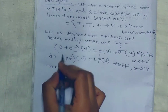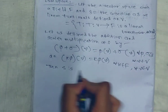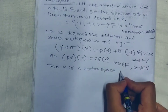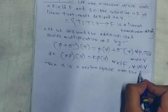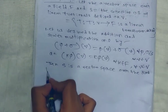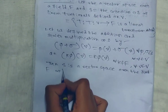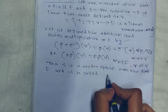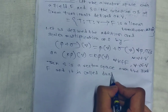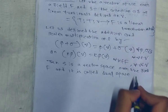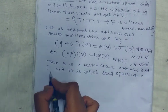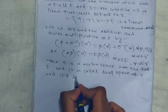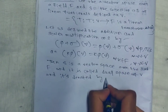Then S is a vector space over the field F, and it is called the dual space of V. It is denoted by V*.